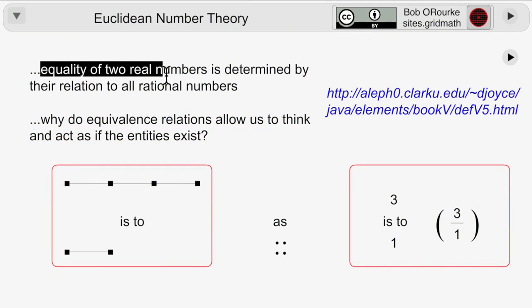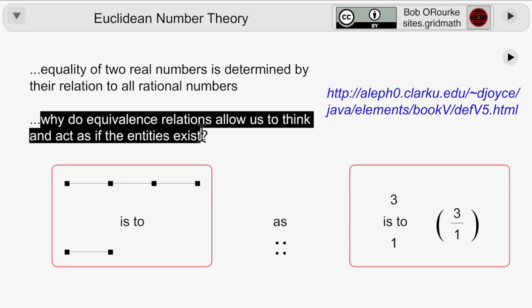In Joyce's online version of Euclid, the equality of real numbers is discussed here at this page. And also the equivalence relations, which allow us to think as if those real numbers exist.